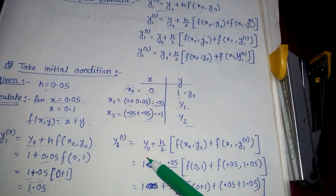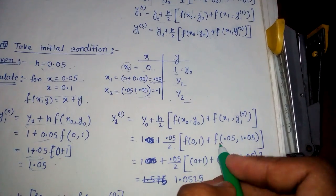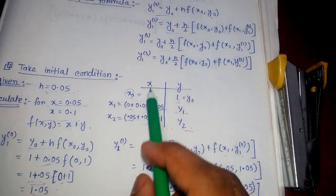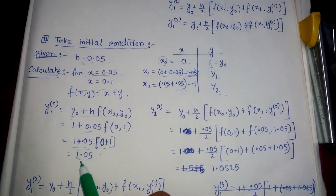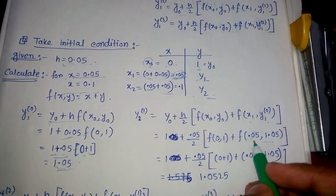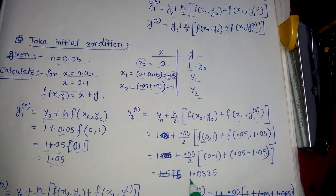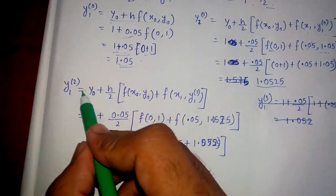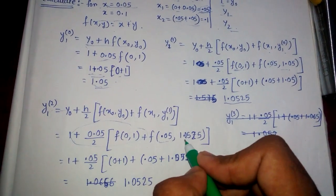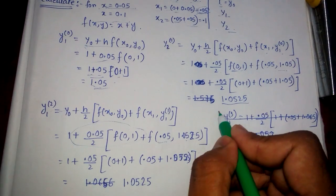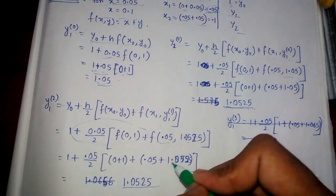Next we calculate y1¹ using the formula: y naught plus (h/2) times [f(x naught, y naught) plus f(x1, y1⁰)]. We know y naught, h/2, and f(0,1). For f(x1, y1⁰), x1 is 0.05 and y1⁰ is 1.05, so f(0.05, 1.05) equals 0.05 plus 1.05 equals 1.1. Then we calculate y1², using y1¹ in place of y1⁰. The value of x1 stays 0.05 and y1¹ is substituted in.